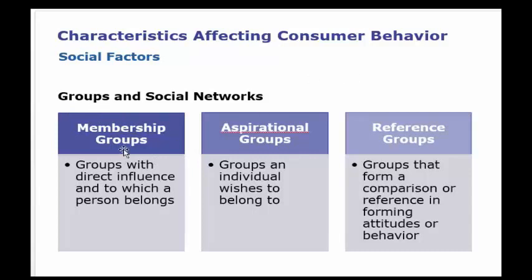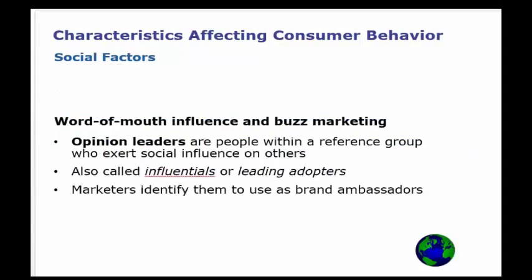Social factors include groups and social networks. Membership groups are those with direct influence to which a person belongs. Aspirational groups are groups an individual wishes to belong to. Reference groups form a comparison or reference point that informs attitudes or behavior. These directly influence how consumers behave and how you should conduct your business.